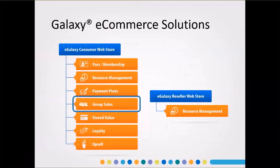Just like the traditional consumer web store, the eGalaxy Group Sales web store also has all of the orders brought into Galaxy and visible within the Order Entry module, which gives you the ability to view any orders that were placed online through Order Entry, as well as potentially perform some type of management functions. Maybe changes or modifications might be needed, and you can do that through group sales. All of the reporting available through our group sales module is there as well.